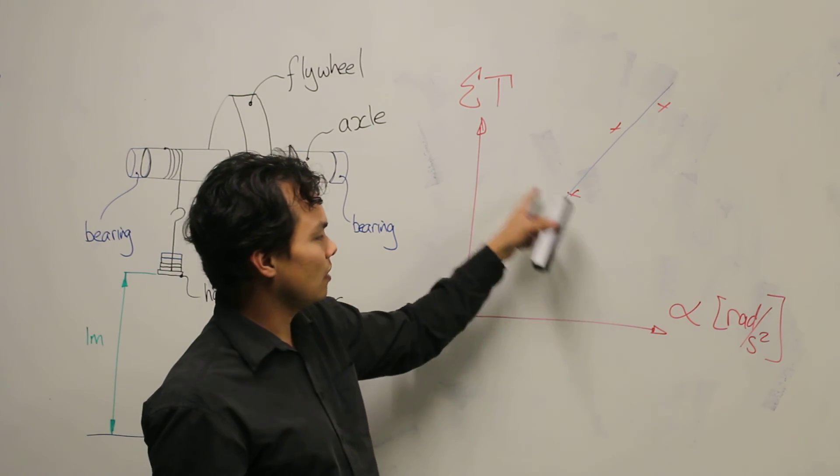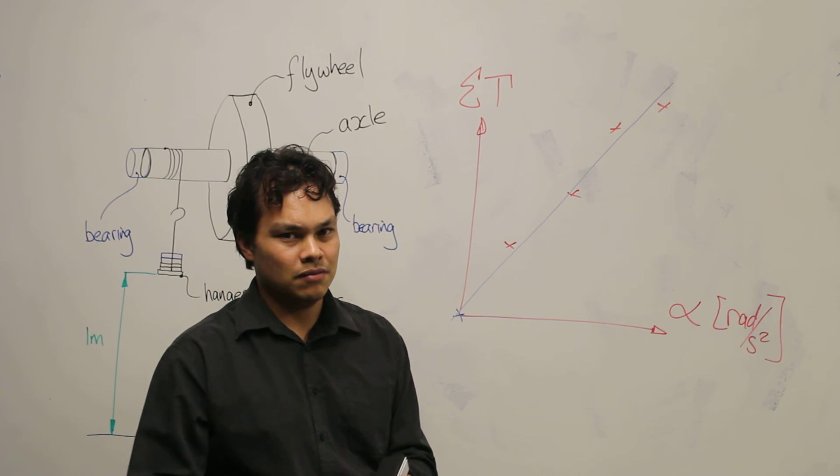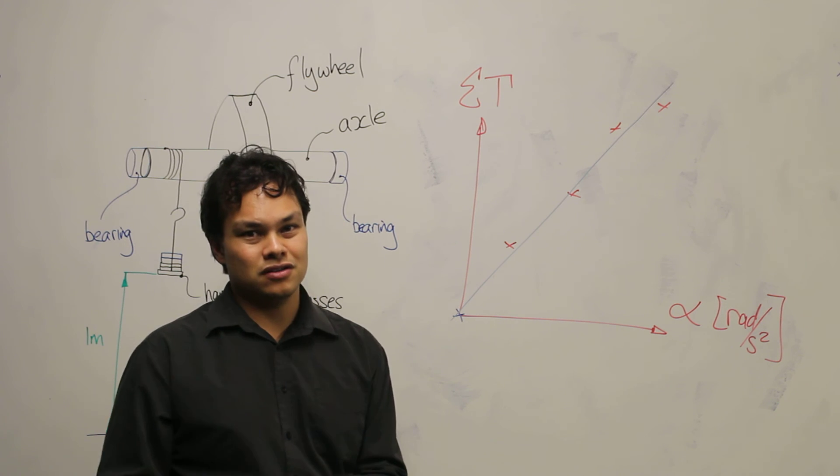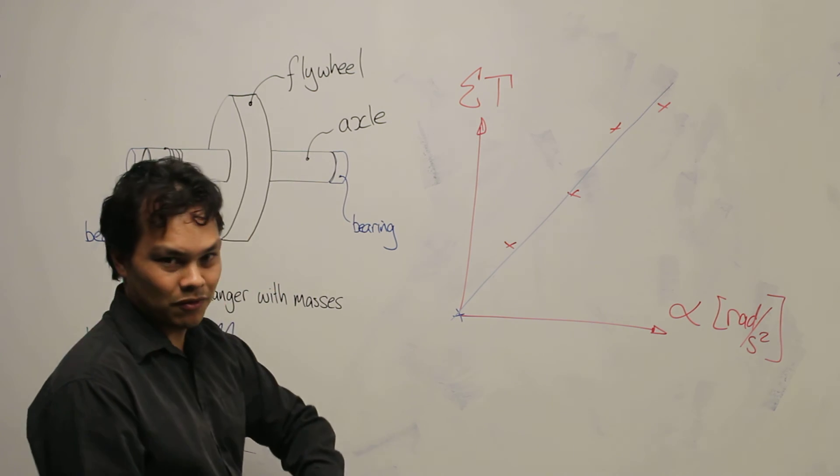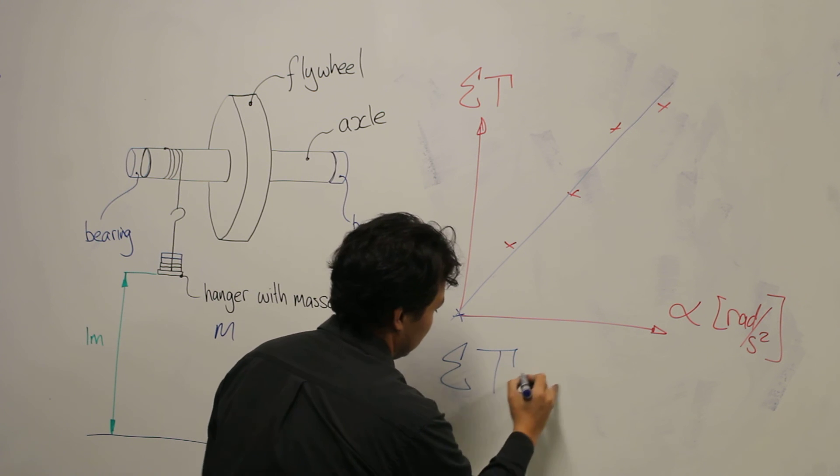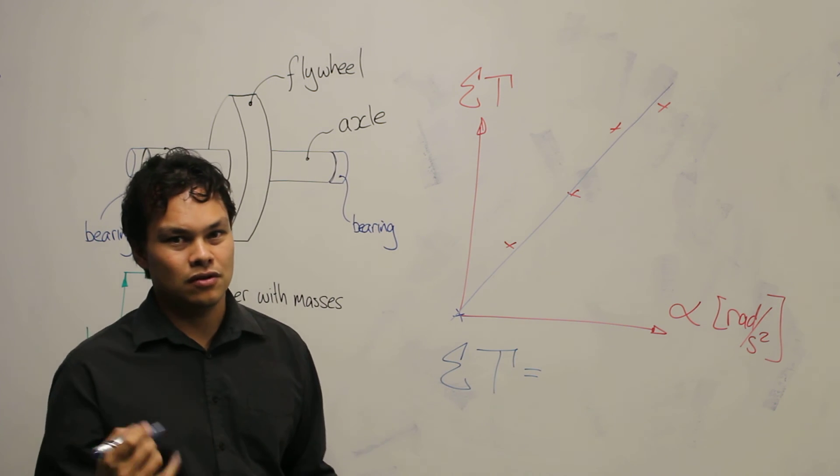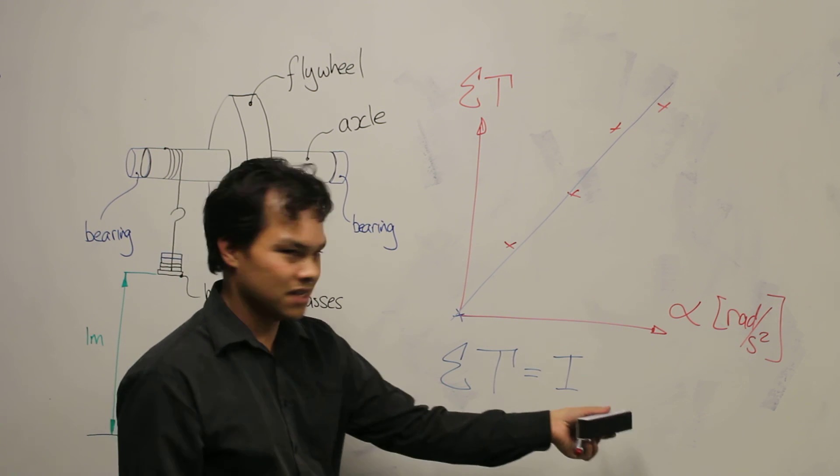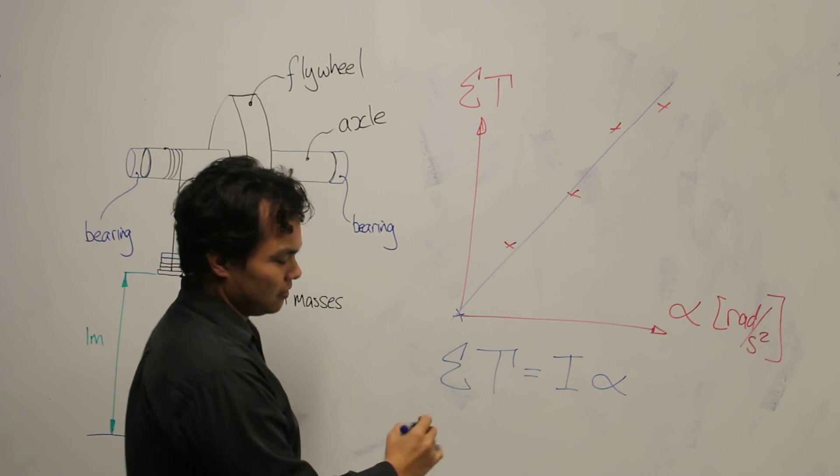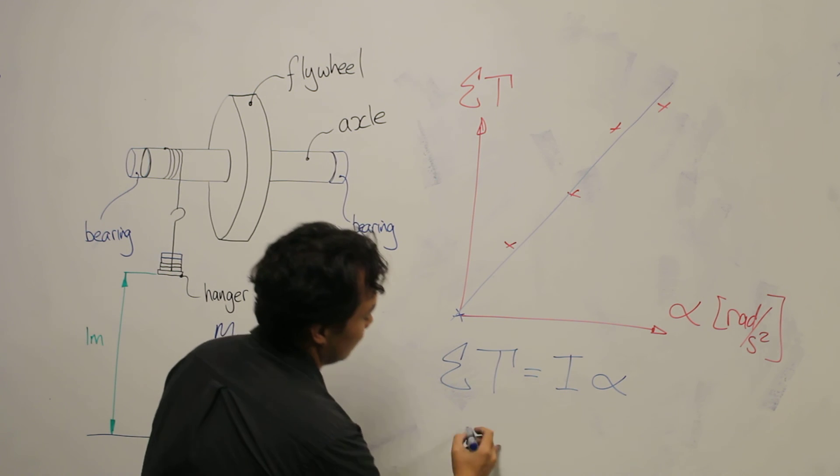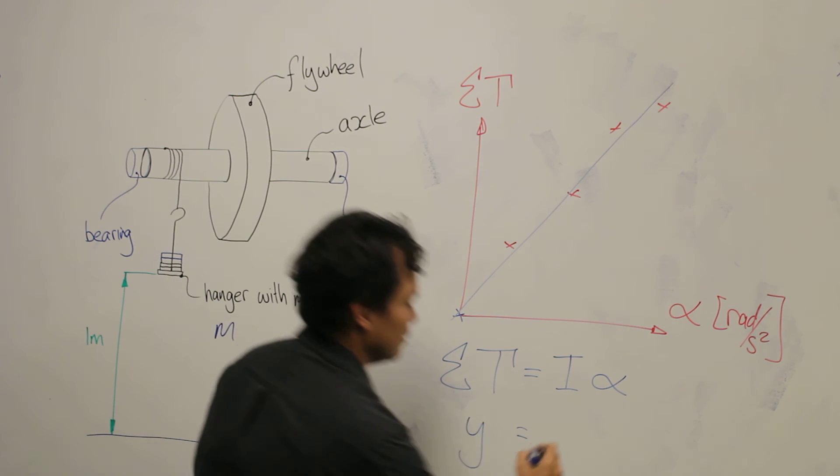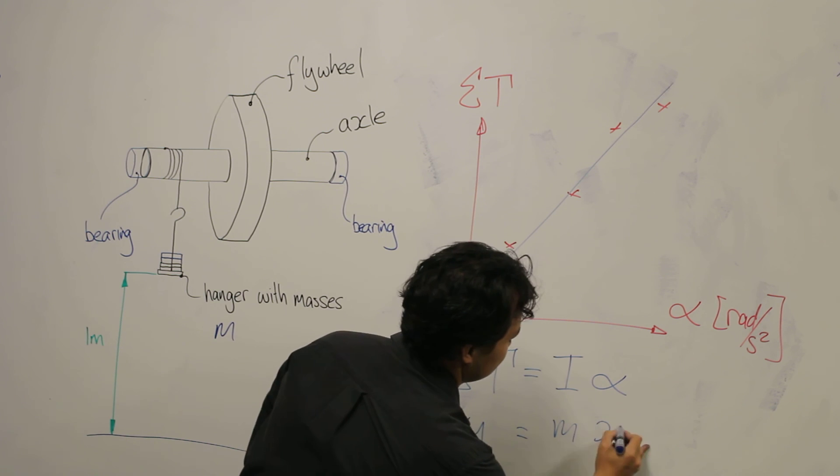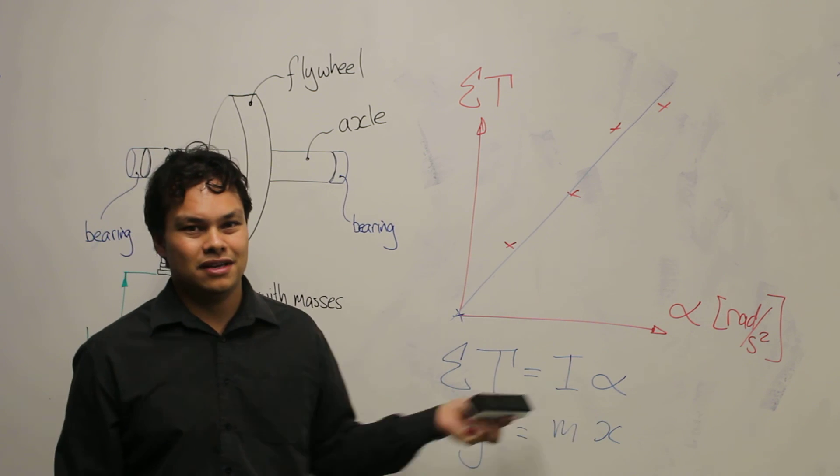Now, the gradient of this curve, of this line, should be the mass moment of inertia for your component. This is because of our equation. The sum of torque is equal to I which is our mass moment of inertia times alpha. This is our y value, our y-axis equal to the gradient times the value on our x-axis. So it's in y equals mx form.